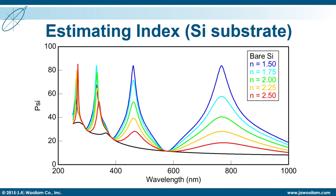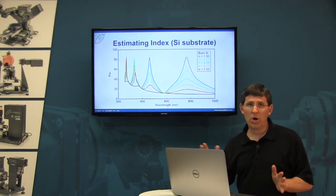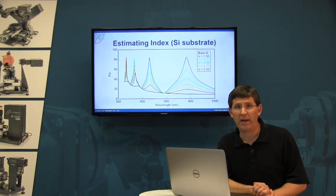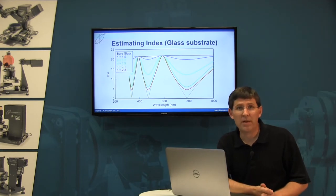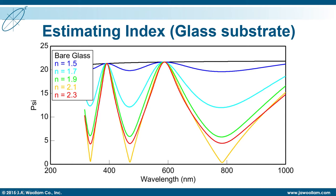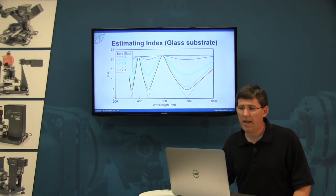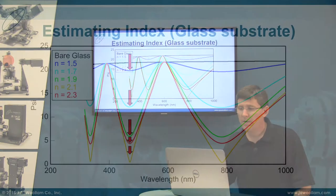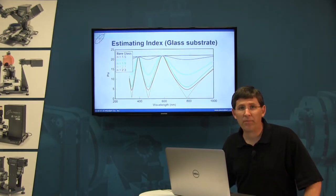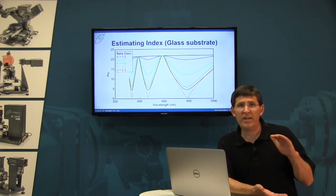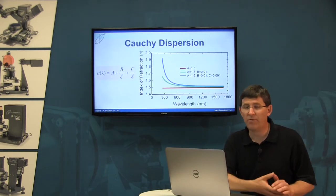As the index of refraction for my film gets larger, the peaks start to dampen their amplitudes. The peaks also will shift right and left — I've corrected for that by adjusting the film thickness. This is easy to follow on a silicon substrate, but as soon as we change to a different substrate, like glass, all of the rules change. Glass has a very low index of refraction near 1.5, and now it looks like the upper envelope for my data oscillations. As I increase the index of refraction for my film, the valleys get lower and lower until they inflect and start to come back. It's mainly the amplitude of these psi oscillations that we use to estimate the index of refraction for our film.